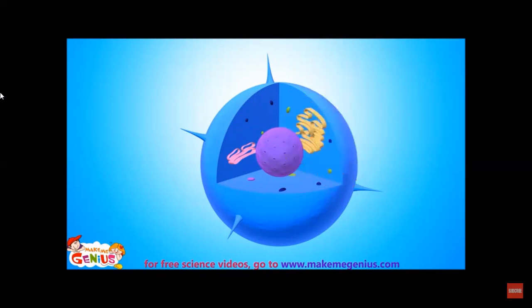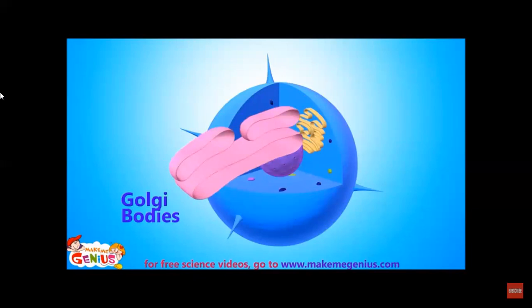Other kinds of important organelles are Golgi bodies. These are the cell's packaging centers. Here, proteins are mixed with other chemicals. These are packed in bubble-type boxes. They break away from Golgi bodies and get pushed out of the cell membranes.